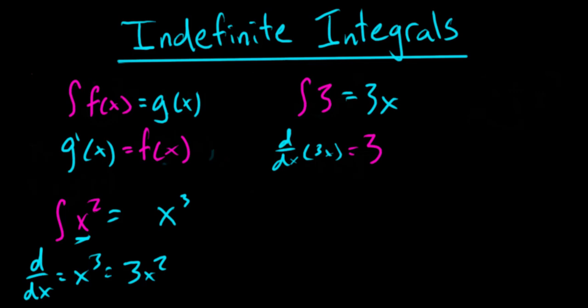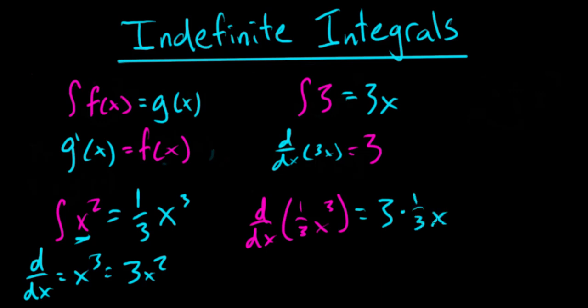However, we're integrating only x squared — there's nothing there. So when we bring our 3 to the front, there must be something there that gets rid of it. What times 3 would get rid of that 3? It turns out 1 third does — 1 third times 3 is just 1. We can check this: if we take the derivative of 1 third x cubed, we bring our 3 to the front, multiply by everything we have, and lower the power by 1. 3 times 1 third equals 1, so we get x squared. We know indeed that the antiderivative of x squared is equal to 1 third x cubed.